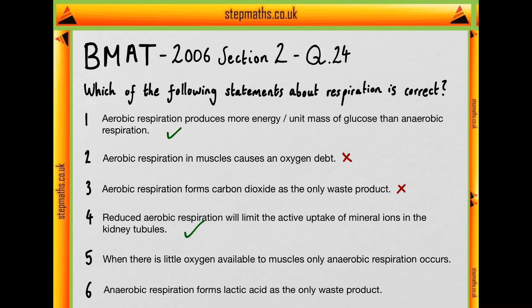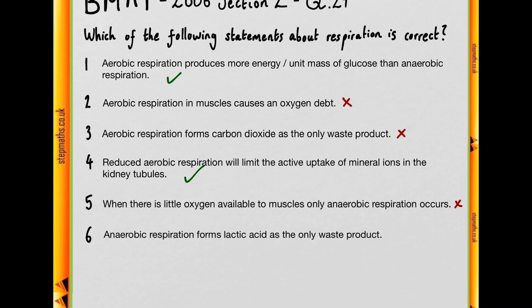Moving on to five: when there is little oxygen available to muscles, only anaerobic respiration occurs. We can say this to be false, because that little oxygen, no matter how much it is, will be used for aerobic respiration — so not only anaerobic respiration will occur; some aerobic will too.